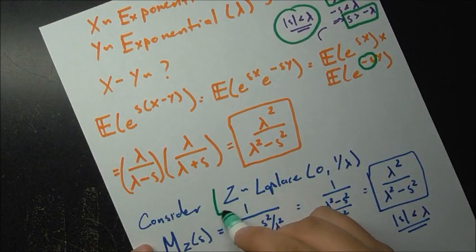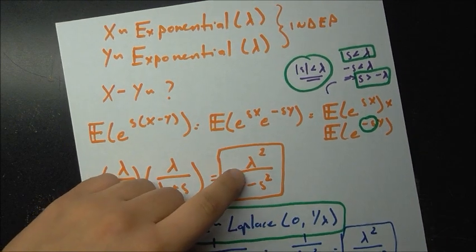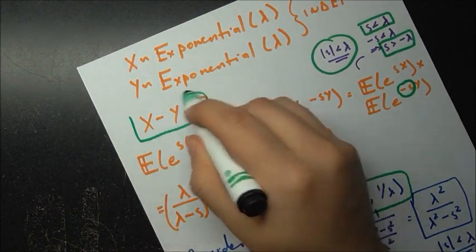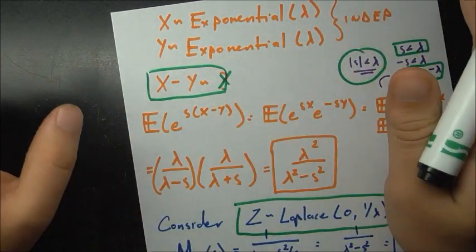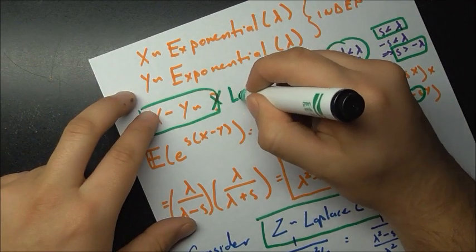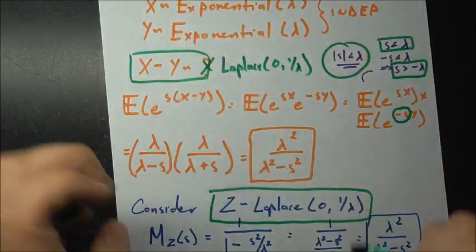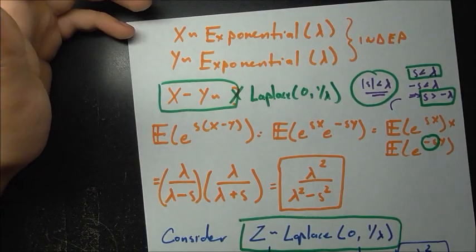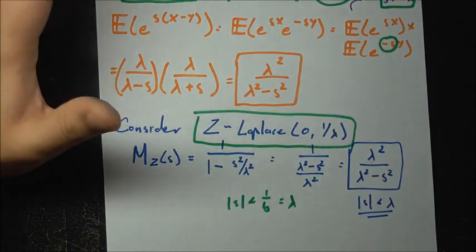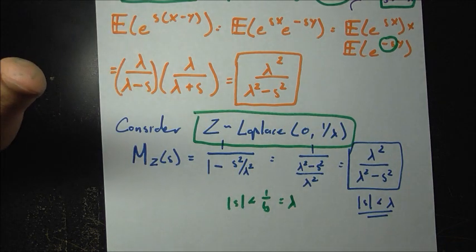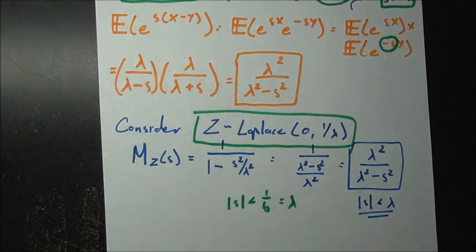So the distribution of x minus y is Laplace with mu equals zero and b equals 1 over lambda. We can see that the difference between two independent exponential random variables with the same parameter is given by a Laplace distribution. It is very cool how these things are connected with each other. Hope you learned something from this video, and until next time.